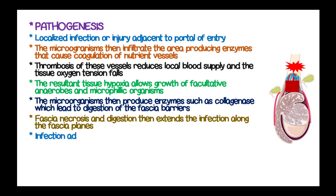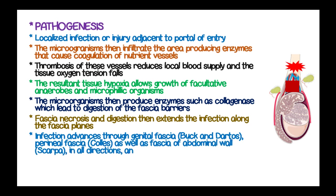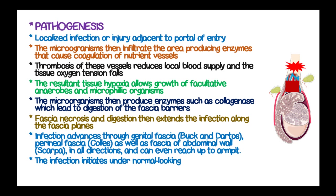The fascial necrosis and digestion then extends the infection along the fascial planes. This infection advances through the genital fascia — known as Buck's and Dartos fascia — the perineal fascia, which is Colles' fascia, as well as the fascia of the abdominal wall known as Scarpa's fascia, in all directions and can even reach up to the level of the armpit. The infection sheathes and spares normal-looking skin.